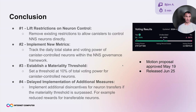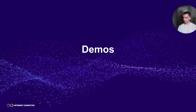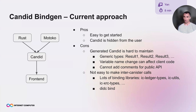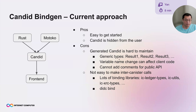Next we jump into demos. The first is about making Candid more flexible. This demo is about how we generate bindings for Candid to various host languages. The current approach: people start with the host language — like Rust or Motoko — build the backend, we generate the Candid binding, and the frontend uses that Candid. The benefit is it's easy to get started and people don't need to know Candid. But as projects get bigger, it becomes harder to maintain.